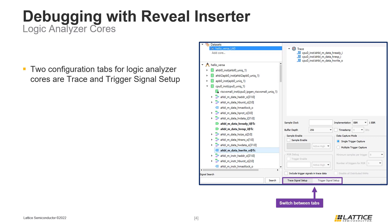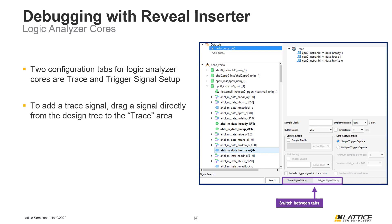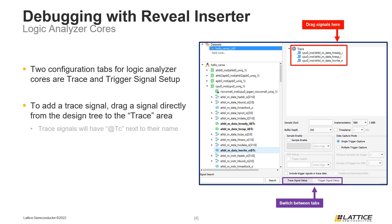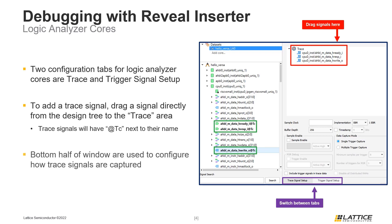The first thing users should do is configure the trace signals for their debug session. To begin adding a trace signal, drag a signal from the left side of the Inserter window to the Trace section. If a signal was successfully added, a TC will appear next to its name indicating that it is a trace signal. The settings in the bottom half of the window are used to control how the trace signals are captured.